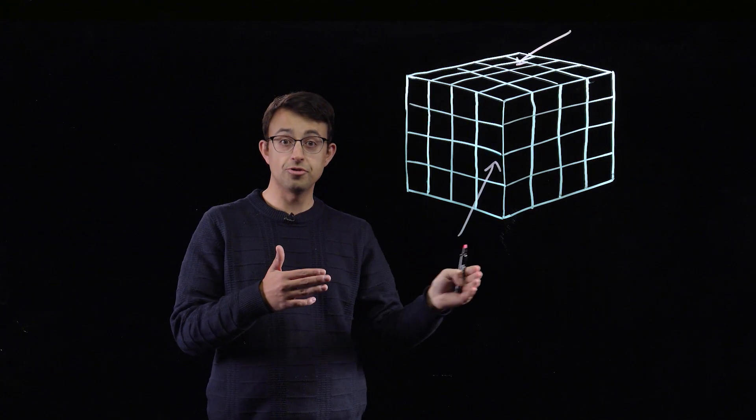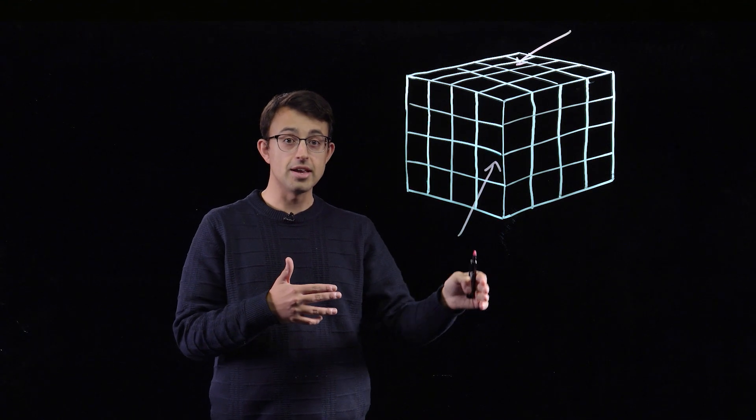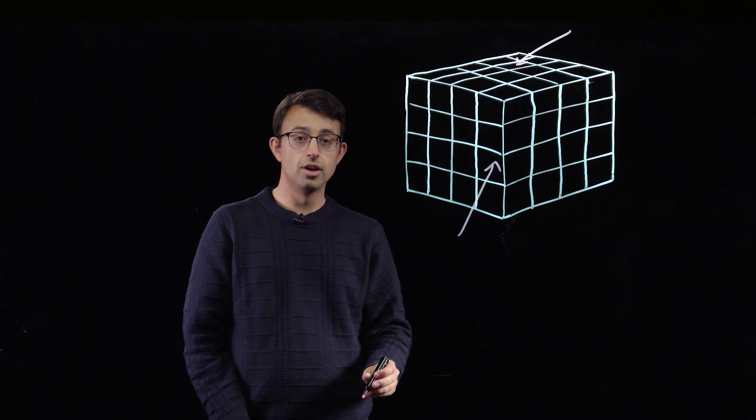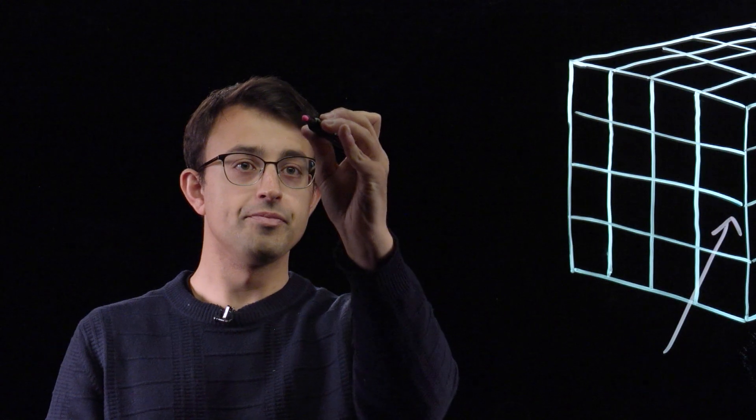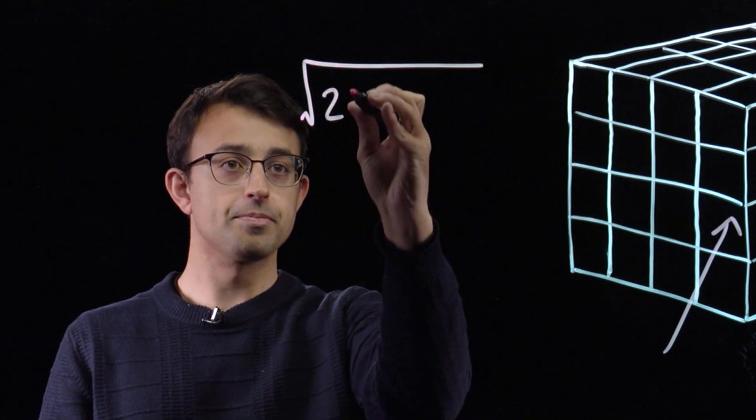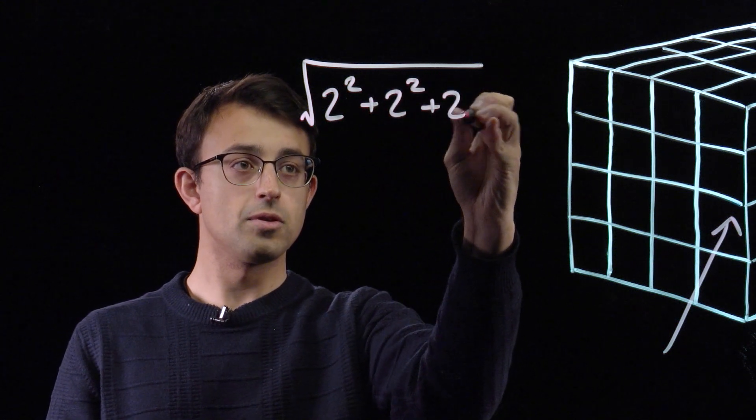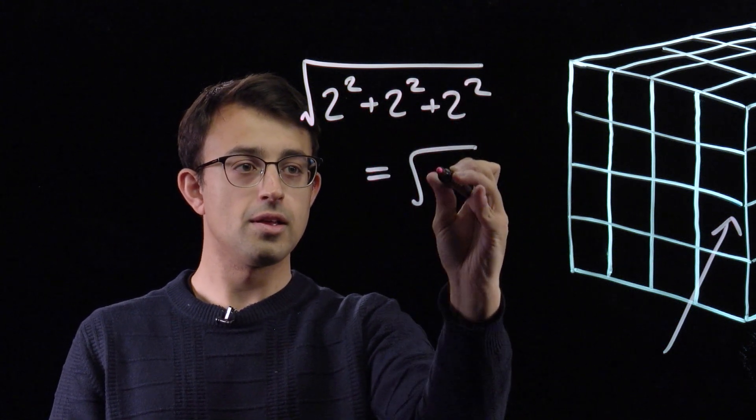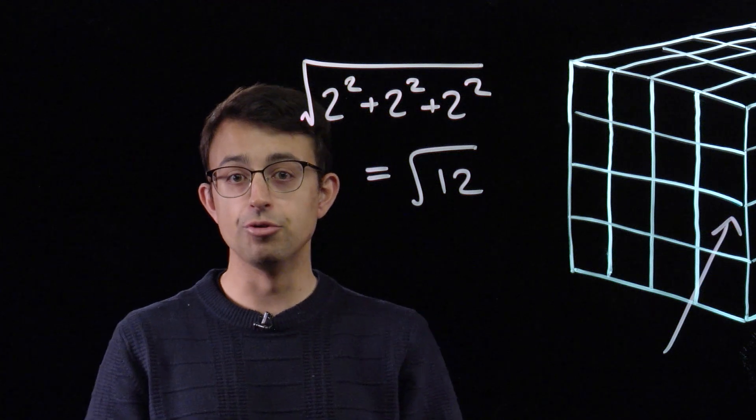These cubes are distance two away from each other in each coordinate direction. So the total distance is given by Pythagoras as being the square root of 12.